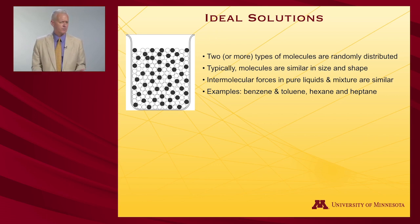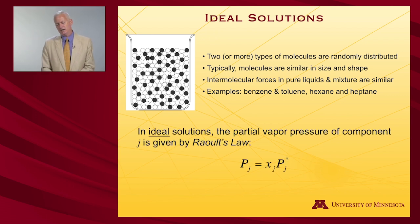Good examples of that might be benzene and toluene. Toluene has a methyl group on the aromatic ring, so those are pretty similar molecules. Hexane and heptane, both linear alkanes, one is one unit longer than the other.